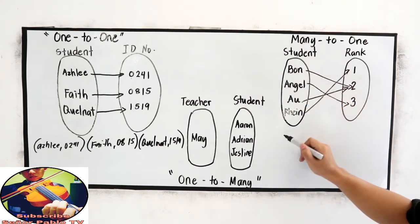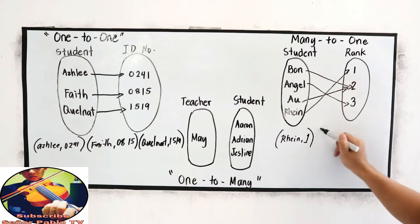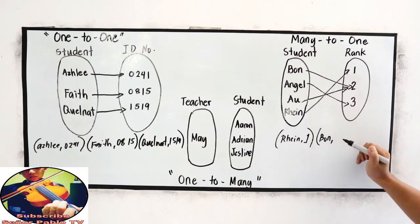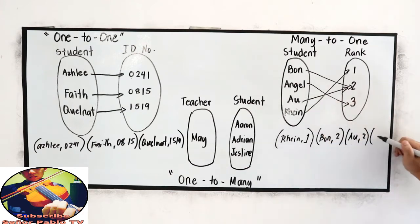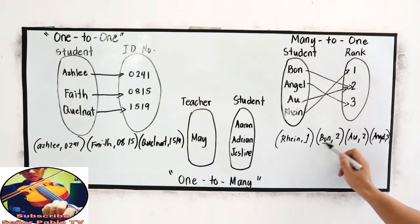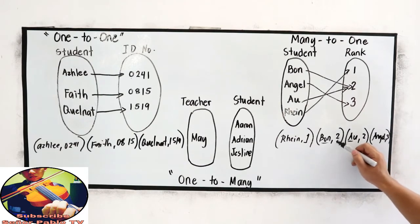So, if we're going to write in as ordered pair, that is Rain, 1. Bon, 1 is 2. Au, 2, and Angel. So, many as our domain, then X, Y.